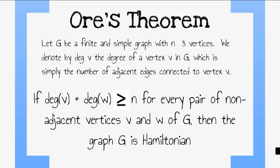Orr's Theorem states that if DEG V plus DEG W is greater than or equal to N, for every pair of non-adjacent vertices V and W of G, then the graph G is Hamiltonian.